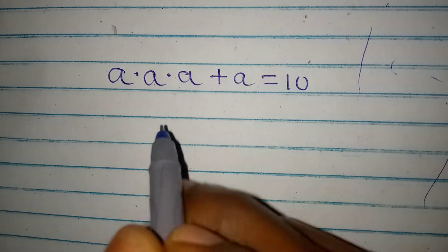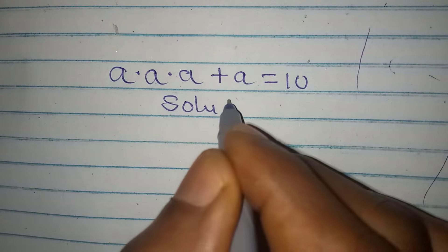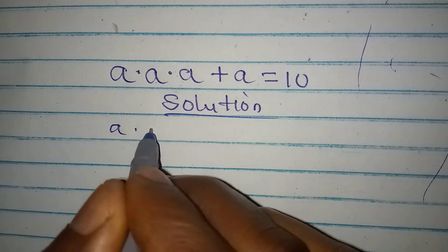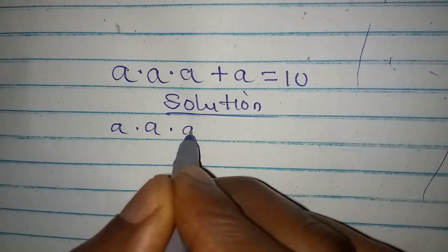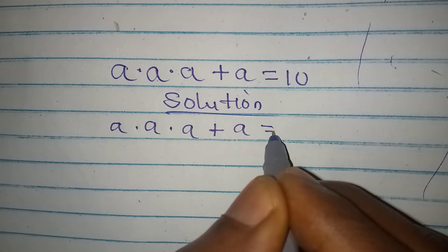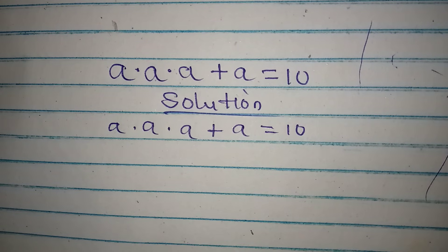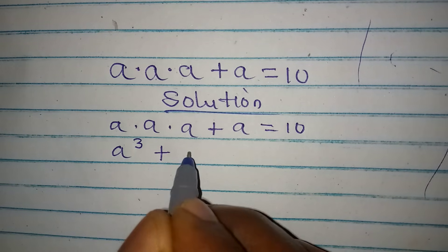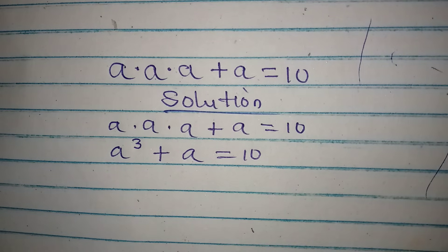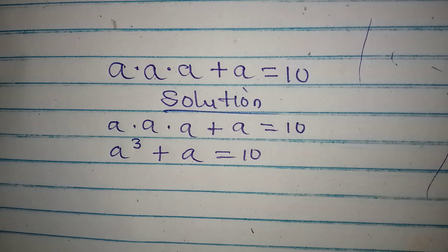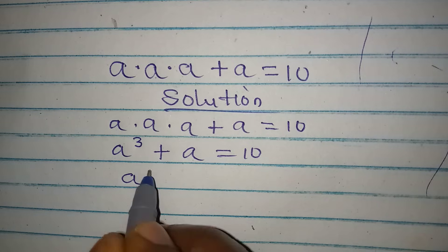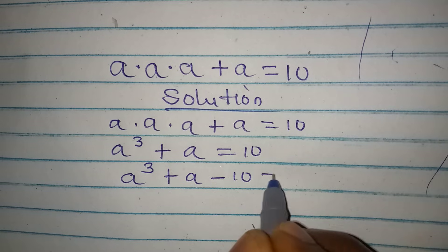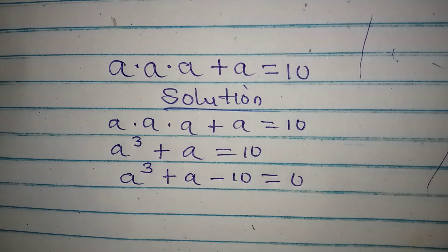Let's provide the solution to this problem. We have a × a × a + a = 10, which gives us a to the power of 3 plus a equal to 10. Bringing 10 to the left, we have a³ + a - 10 = 0.